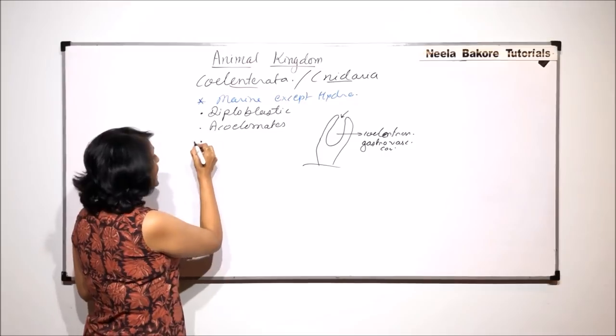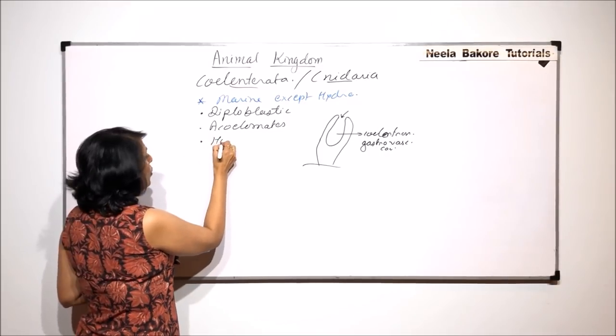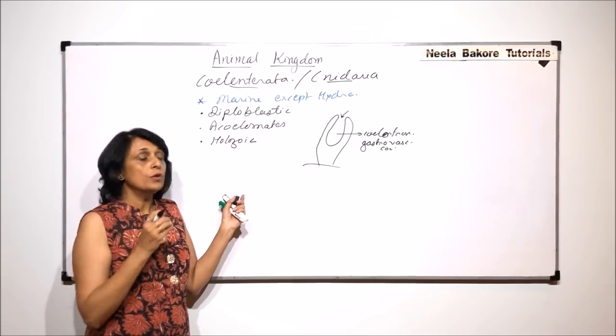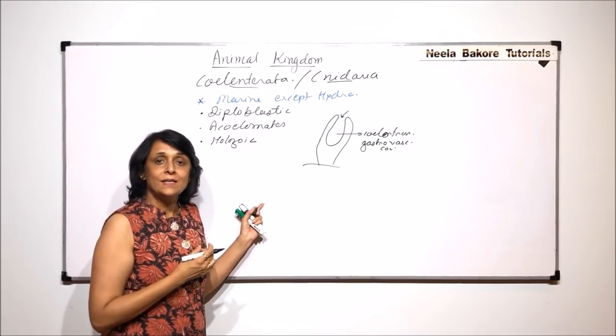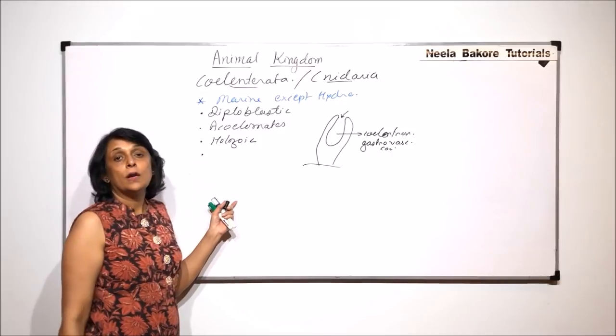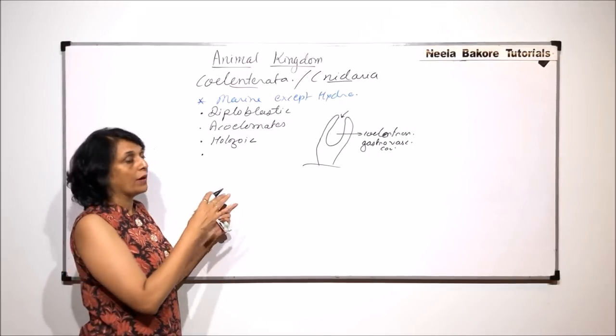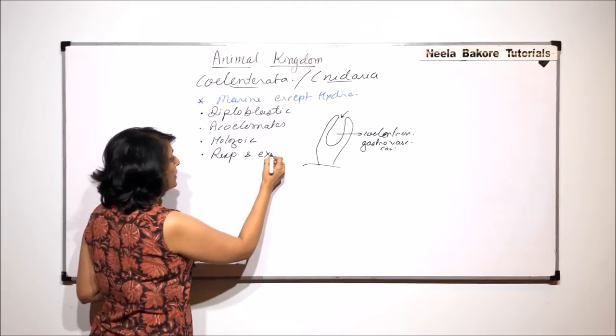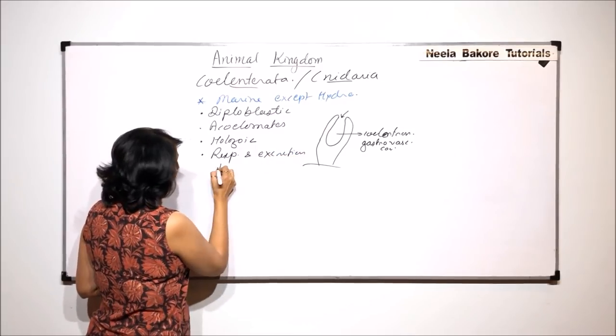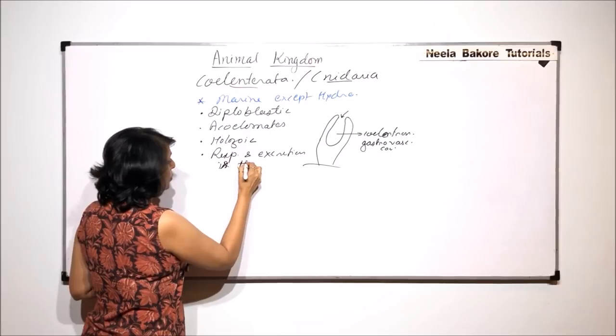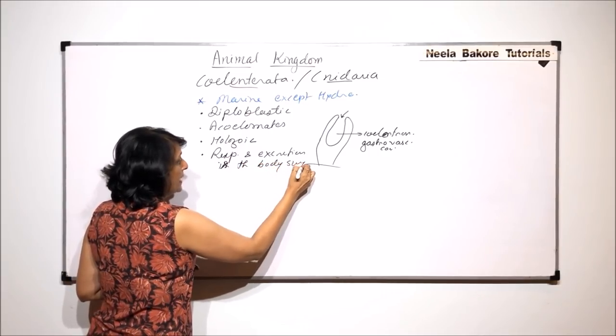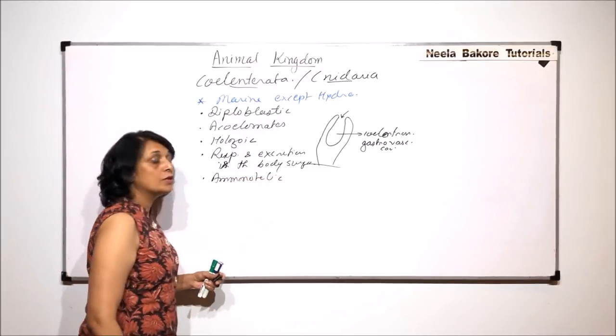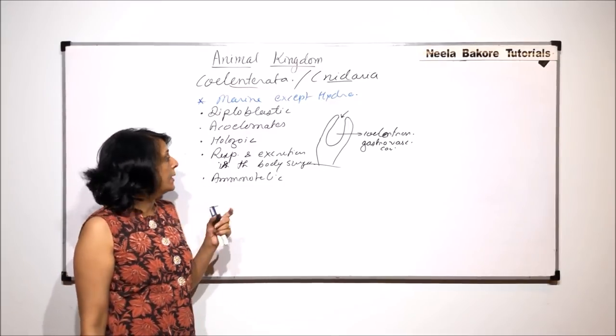The food that they take is a complete food, so they are called holozoic. Many of them are carnivores, so they are taking the complete food. Digestion is intra as well as extracellular. For elimination of the waste, they have the body surface. So the respiration and excretion, that is elimination of the nitrogenous waste, is through body surface. And they are ammonotelic. That means the main nitrogenous waste is eliminated in the form of ammonia.